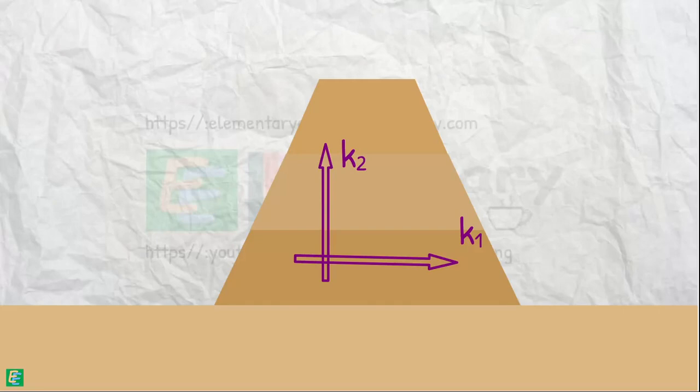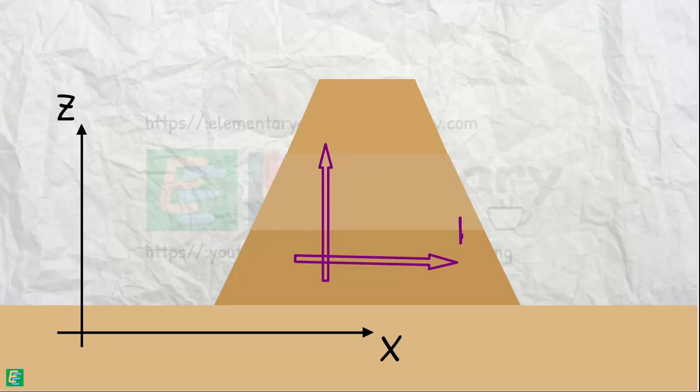In such anisotropic soil, if these directions are denoted as x and z respectively, then we can write the permeability in x direction as kx and permeability in z direction as kz.